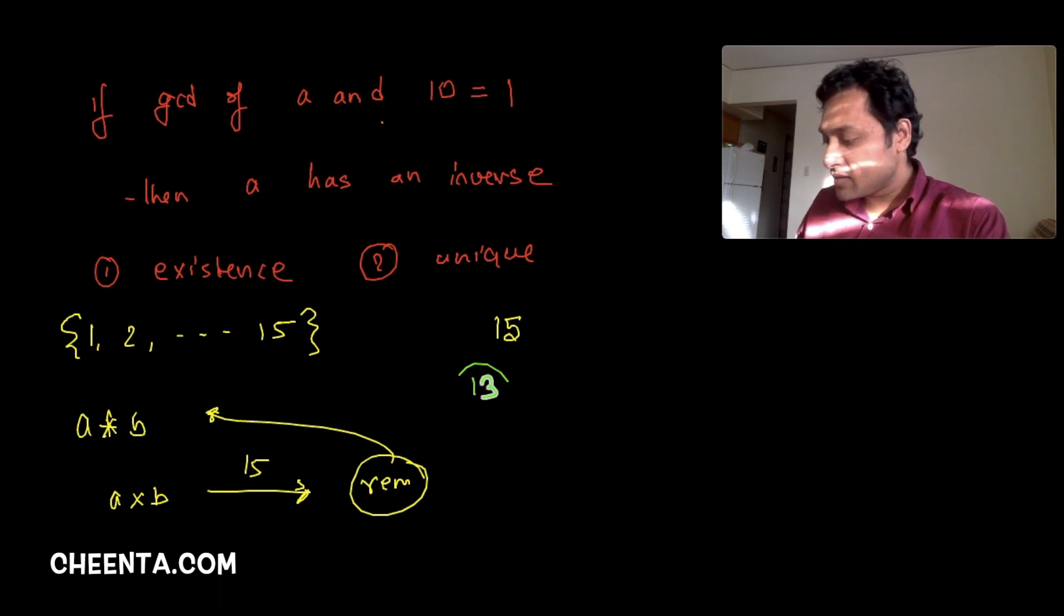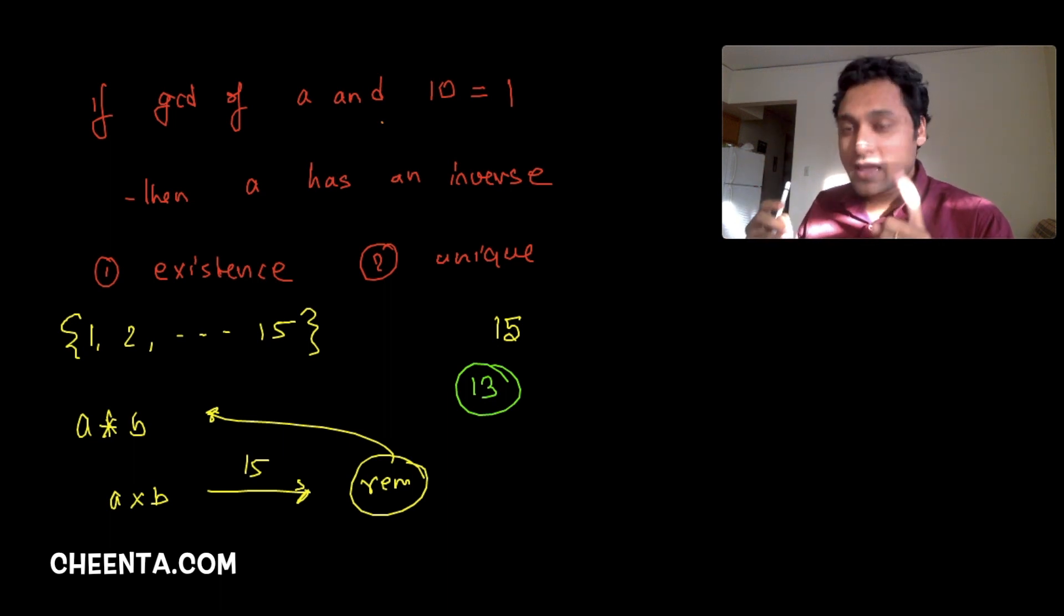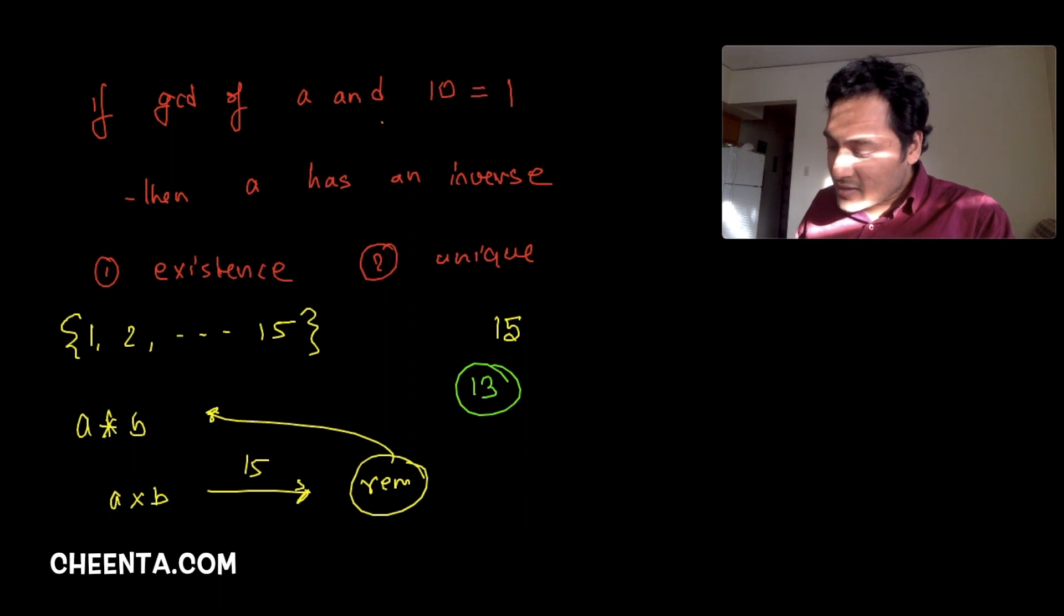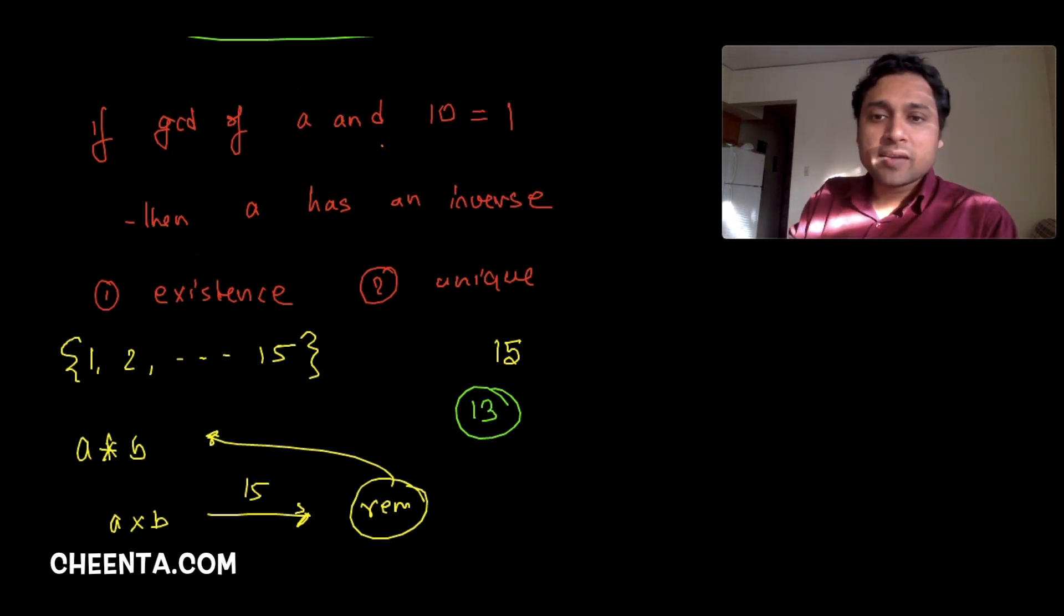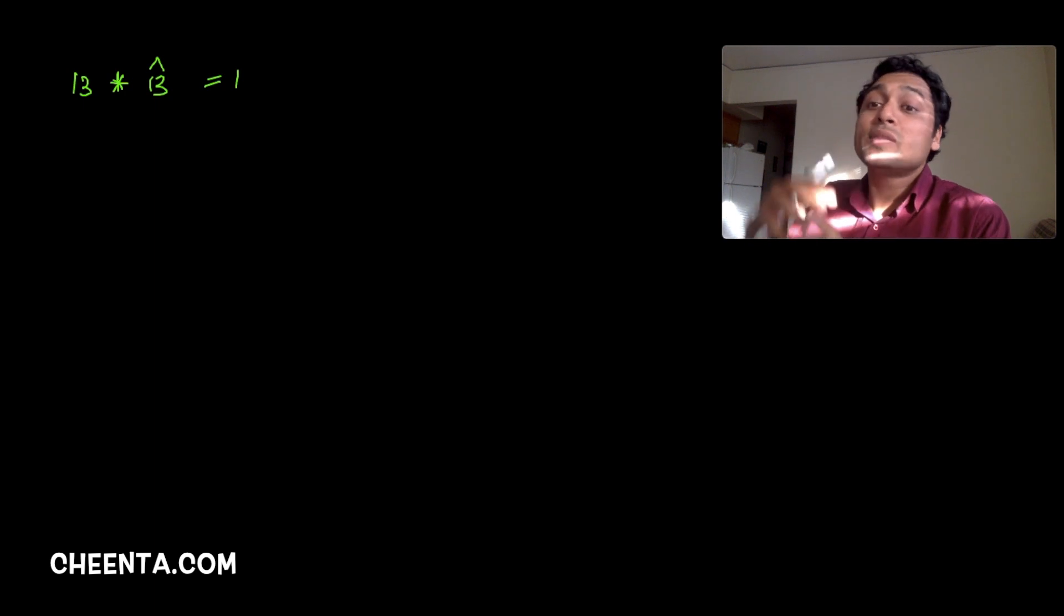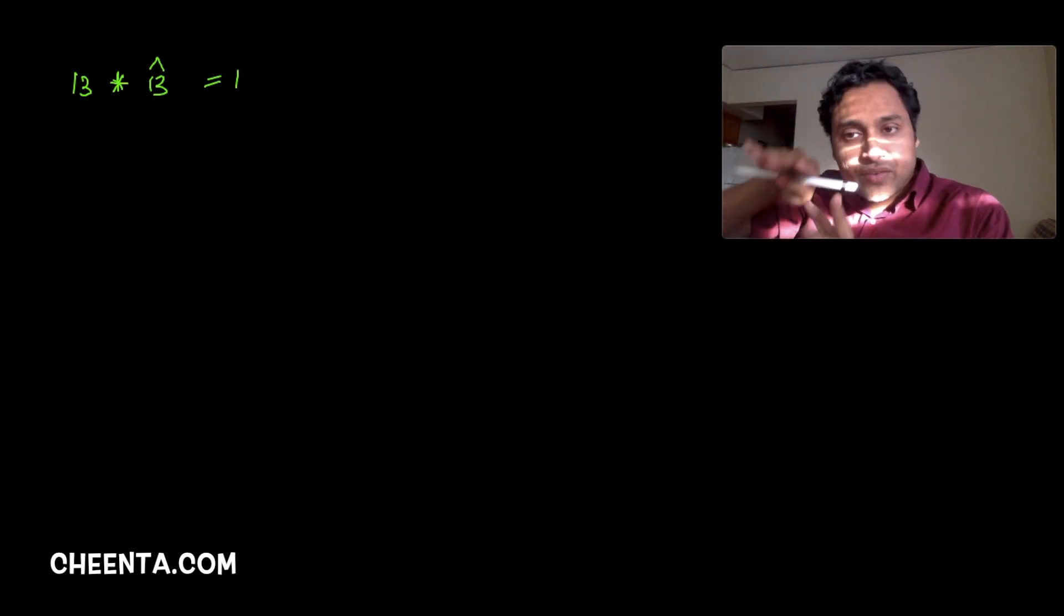Let's pick a number whose GCD with 15 is 1. Let's take the number 13. The number 13, its GCD or greatest common divisor with 15 is 1. Our claim is that 13 has an inverse. There is another number, let's call it 13 hat, such that if we combine 13 and 13 hat we will get one. So if I multiply 13 with this 13 hat number and divide by 15, the remainder is 1.